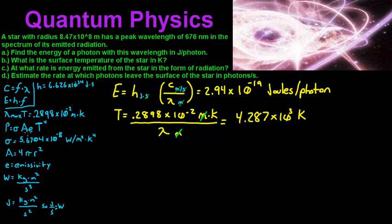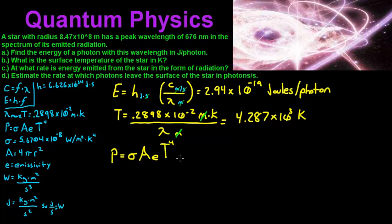We've got our Stefan-Boltzmann constant sigma, times the area of our star — which is the area of a sphere: 4 times pi times r squared — then e is our emissivity. For this problem, we're assuming this is a black body, so e equals 1, which just means it absorbs all the light. Then we input the temperature. So: power equals sigma times A times e times T to the 4th.